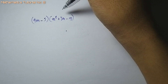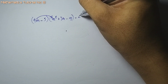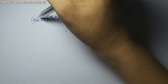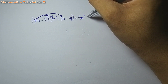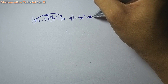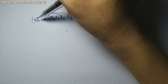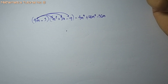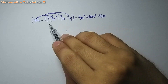So i-distribute ang 4m sa pikas. 4m times m squared, that is 4m cubed. Sunod, 4m times 7m, that is 28m squared. Dayon, 4m times negative 9, that is negative 36m. Na-distribute na si 4m sa tanang terms.